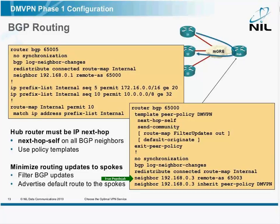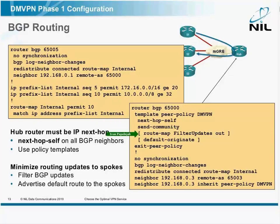It's a good idea to use peer policy templates where you specify all the eBGP parameters — such as sending community, setting next-hop to myself, filtering some updates, or originating the default route if that's your design. All these parameters are specified only once in the peer policy template, and then you just apply the template on a neighbor and the neighbor inherits all the parameters.